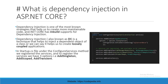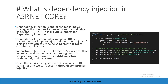In the Startup.cs file, under the ConfigureServices method, we register the services. To register services, we have three options: AddSingleton, AddScoped, and AddTransient. As you can see in the code, we have added three services — one as Singleton, the second as Scoped, and the third as Transient. Once the service is registered, it is available in the DI container and we can access it through constructor injection.